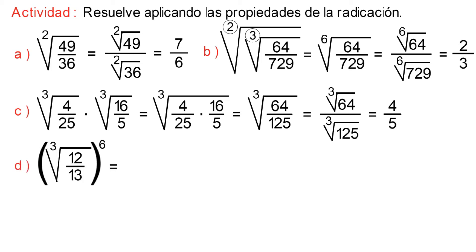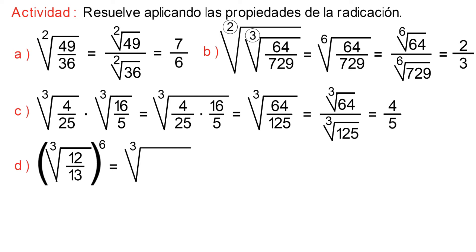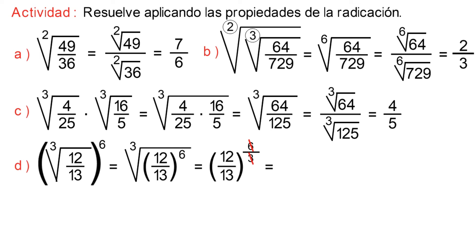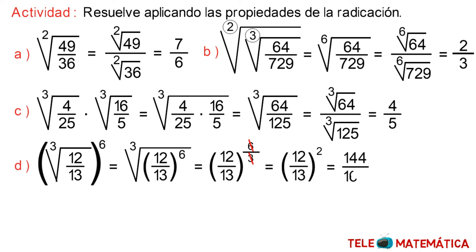Literal D: cube root of (12/13) raised to the sixth power. Here we apply the property of the power of a root. This gives us the cube root of (12/13)^6. Then we apply the property of the nth root of a power, giving us (12/13) raised to 6/3. Now, simplifying the fraction of the exponent, we get (12/13) squared. Resolving the power, the final result is 144/169.